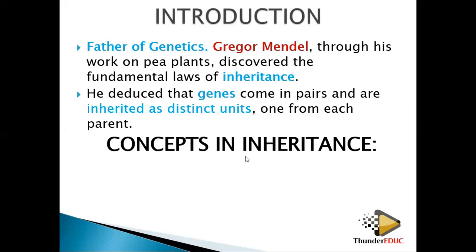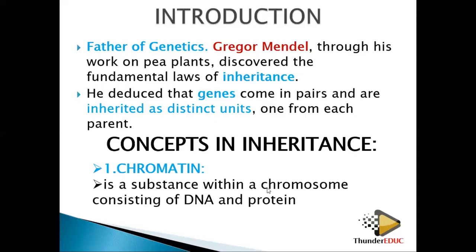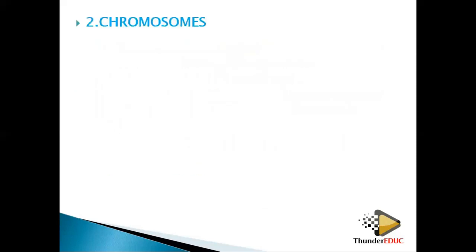Now let's look at some concepts of inheritance — the terminologies. Chromatin is a substance within a chromosome containing DNA and protein. Chromatin is DNA in thread form; in its coiled form it is called chromatin.